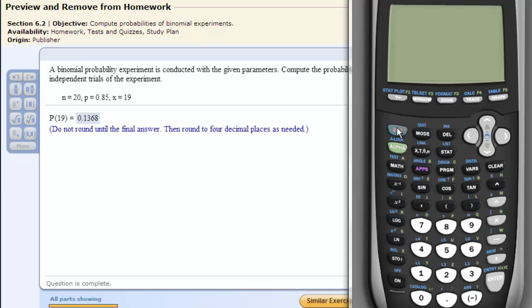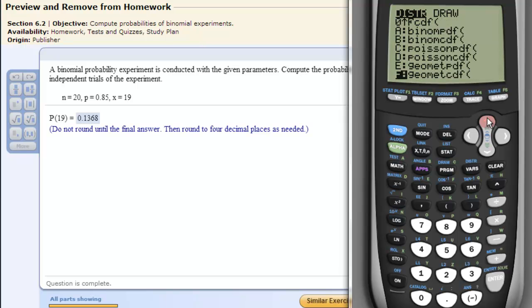turn it on, go to second VARS to get to distributions. You can go up or down, but it's easier if you click up. We want to go to binompdf, the binomial probability distribution function. Click enter.